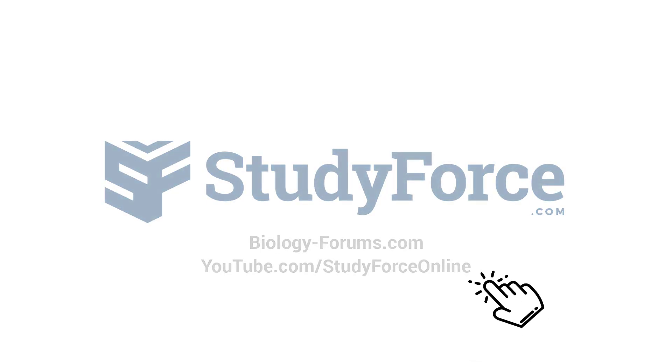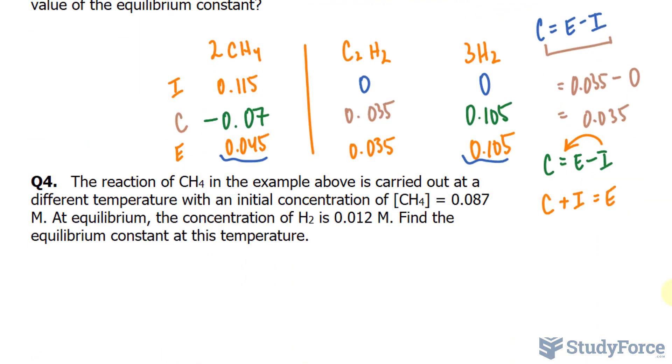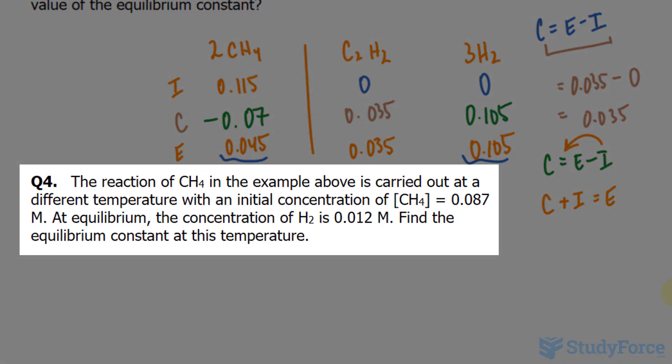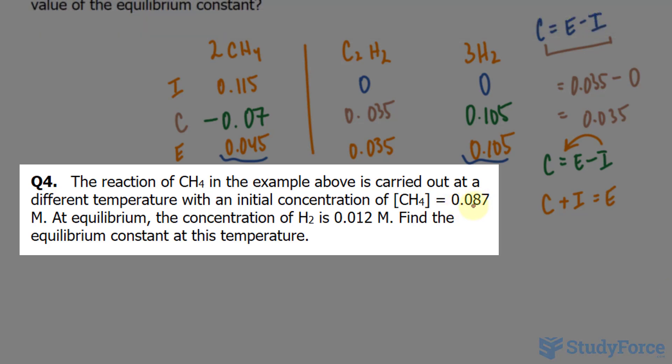Welcome back to the last question of this series where we find the equilibrium constant from experimental concentration measurements. We ended off with question 4 which reads: the reaction of CH4 in the above example is carried out at a different temperature with an initial concentration of CH4 that is 0.087 molar. At equilibrium, the concentration of H2 is 0.012 molar. Find the equilibrium constant at this temperature.